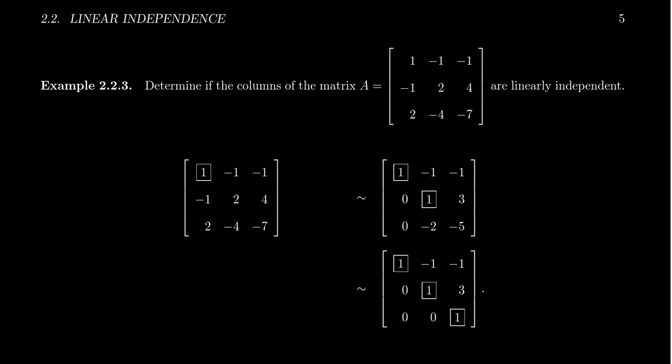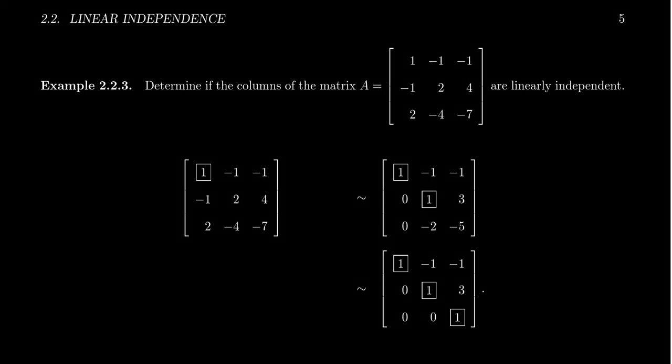Let's determine if the columns of the matrix A, which A is given here: 1, negative 1, negative 1 in the first row; negative 1, 2, 4 in the second row; and 2, negative 4, negative 7 in the third row. Are the columns of this matrix linearly independent?